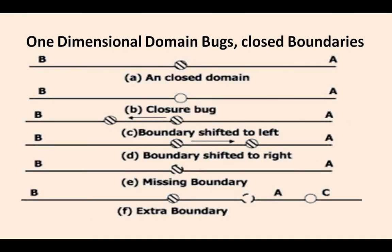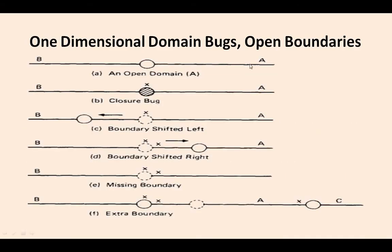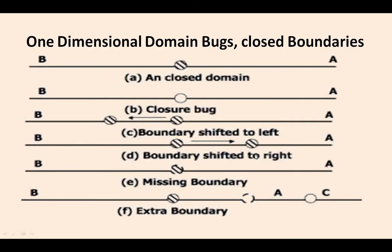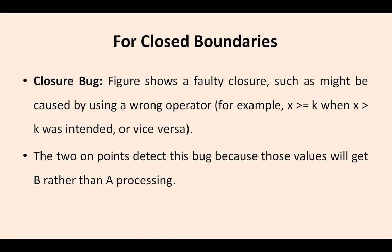Now, what about the closed boundaries? This is one example of the closed boundary. B to A here — a closed domain, a closure bug, boundary shifted to left as well as shifted to right. Some boundary is missing here and some extra boundary is coming here. These are the closed boundaries, not the open boundaries as in the previous case. The errors occur in the closed boundaries. These are the various kinds of errors.